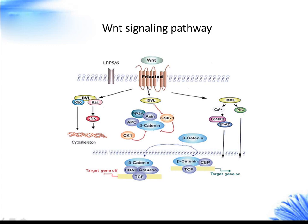WNT signaling is divided into two major branches: the canonical pathway and the non-canonical pathway. The canonical pathway is also called the WNT/beta-catenin pathway. There are two major non-canonical pathways: the WNT planar cell polarity pathway, WNT-PCP pathway, and the WNT-calcium pathway, WNT-Ca2+ pathway.